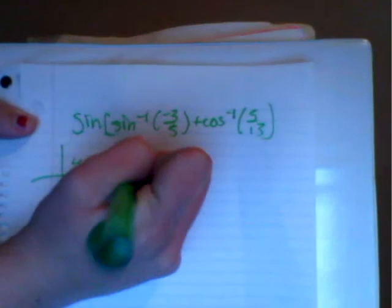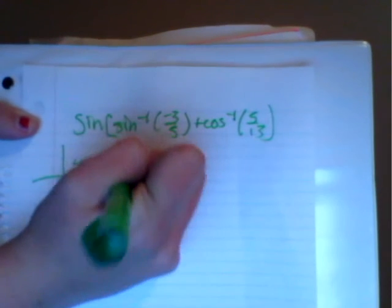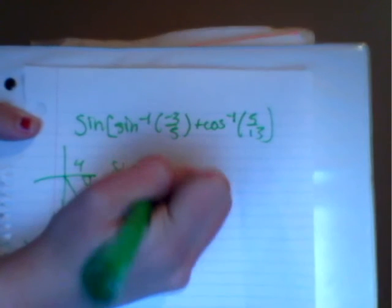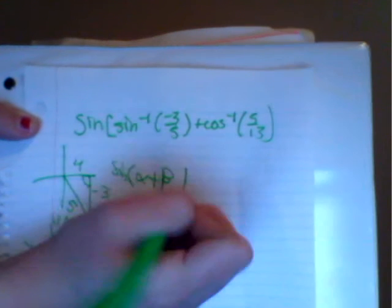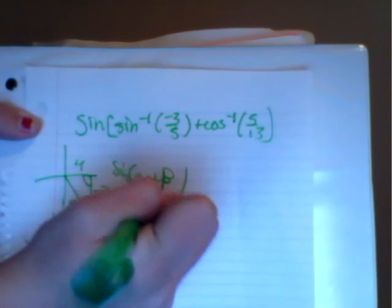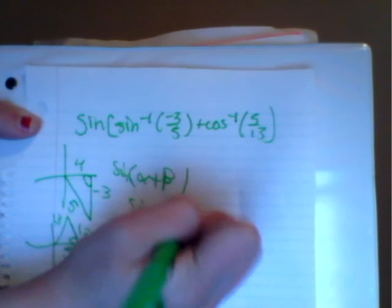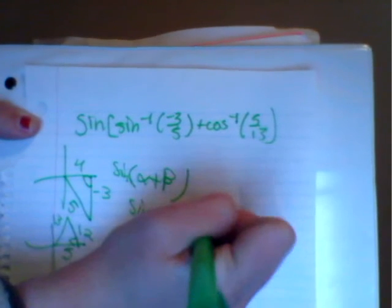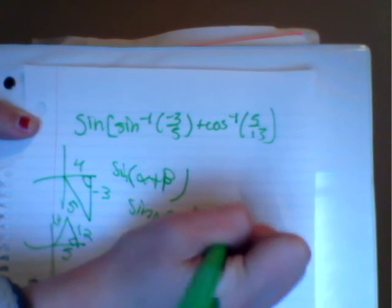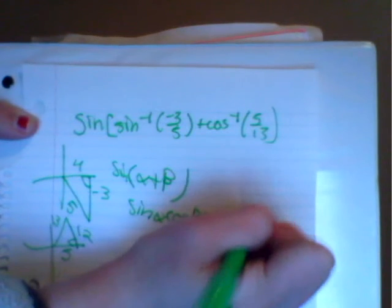it's going to be the sine of alpha plus beta. And that pattern goes sine alpha cosine beta plus cosine alpha sine beta.